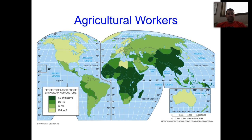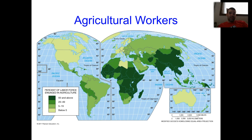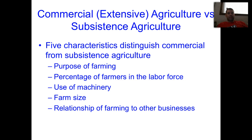Subsistence agriculture, because it's based on survival and what is produced is consumed, is reflected in the number or percentage of agricultural workers in different areas of the world. Western Europe, the United States, and Australia show a very low percentage, while Central Africa and Southeast Asia show the opposite effect. Key comparison points include: What is the purpose — consumption or sale? What percentage of farmers are found in a particular country? Do they use machinery? How big is the farm? And how is farming used relative to other businesses?